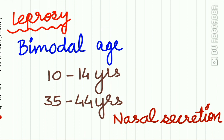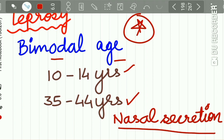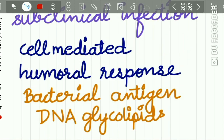An important point: the age of occurrence of leprosy is bimodal — with a peak at 10 to 14 years and then again at 35 to 44 years. The mode of infection is not known, but the probable spread is through nasal secretion.